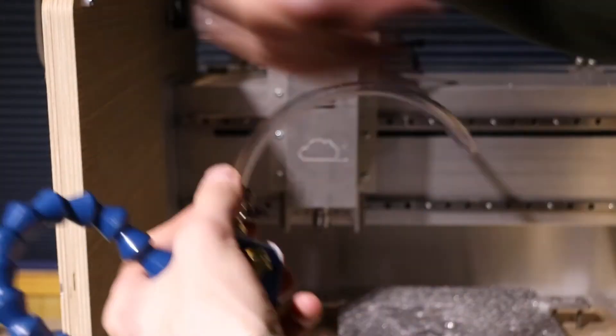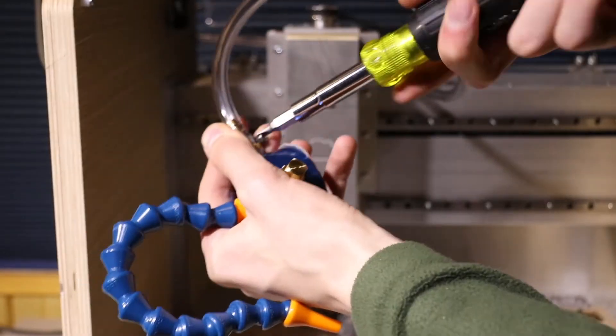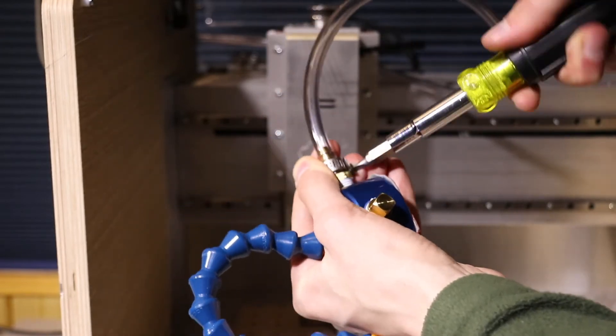And now for the last step I'm attaching the hose to the manifold and placing the manifold onto the spindle mount of the CNC machine.